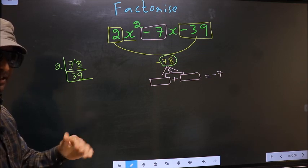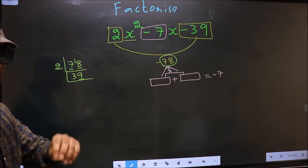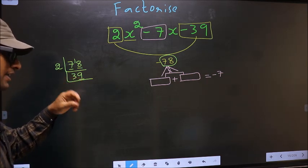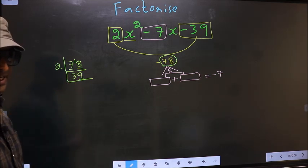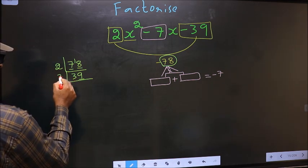Next prime number is 3. To check divisibility by 3, we should add the digits. That is 3+9=12. Is 12 divisible by 3? Yes. So this number is also divisible by 3. So we take 3 here.